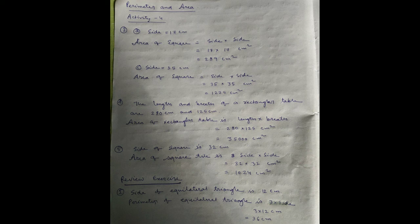Number five: side of square is 32 centimeter. Area of square tile is side into side, equal to 32 into 32 centimeter square, equal to 1024 centimeter square. Now review exercise: side of equilateral triangle is 12 centimeter, so perimeter of equilateral triangle equal to 3 into side, equal to 3 into 12 centimeter.